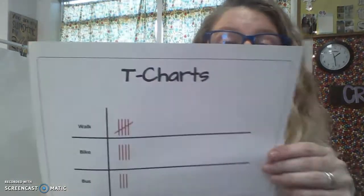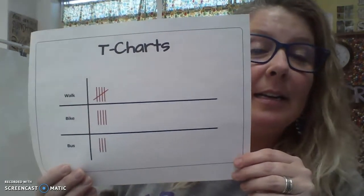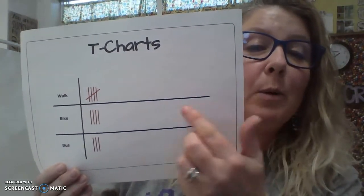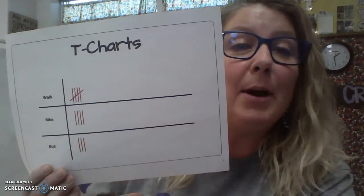All right. The next one is t-charts. A t-chart is where we put our tally marks. T-charts. So t-charts. T-charts.